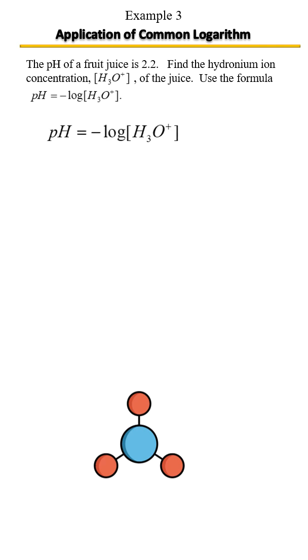So here is the formula for finding the pH of a solution. Well, we already know the pH, so we're going to use this formula to help us find the hydronium ion concentration.